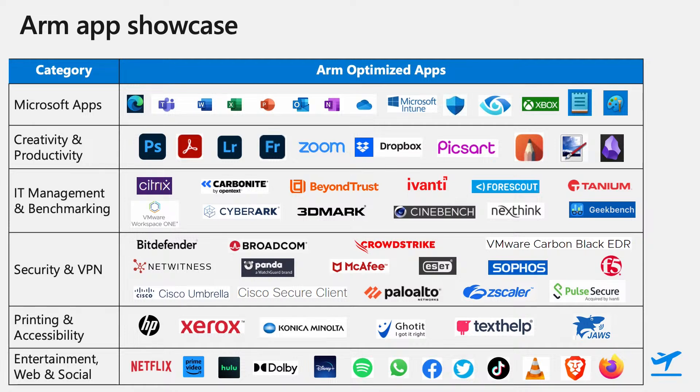Security and VPN is another crucial category for commercial customers, and I'm very glad to say that all market-leading security and VPN products now support ARM devices. These include Bitdefender, Broadcom Symantec, CrowdStrike, VMware Carbon Black, NetWitness, Panda Security, McAfee, ESET, Sophos, and Cisco Umbrella. For VPN, Cisco AnyConnect, Palo Alto GlobalProtect, Zscaler, Pulse Secure, and Fi support ARM devices.